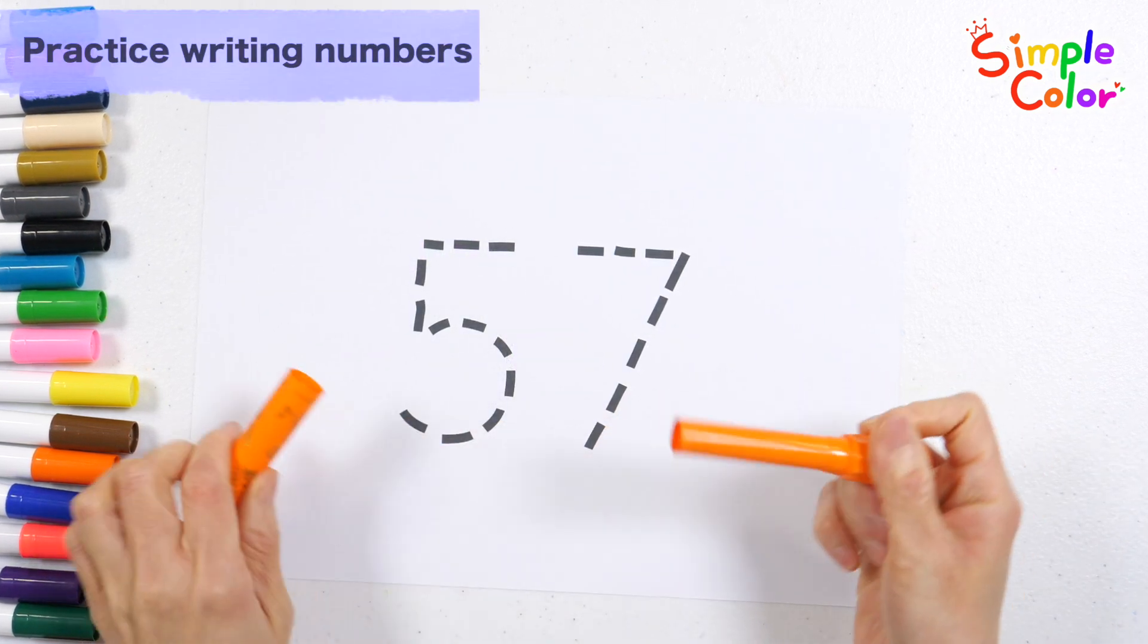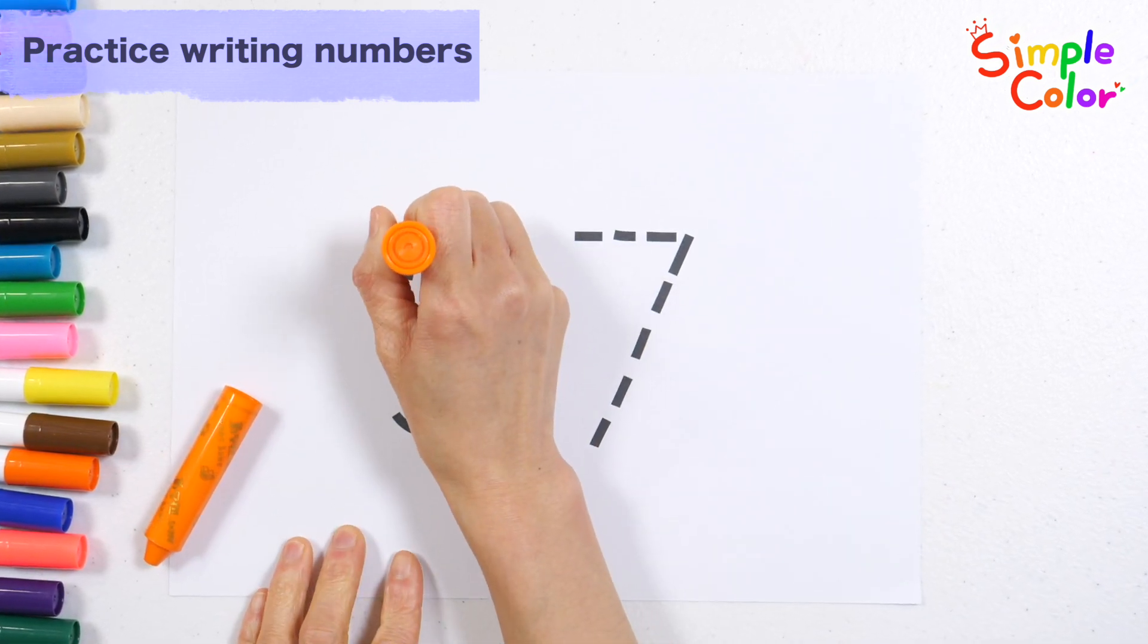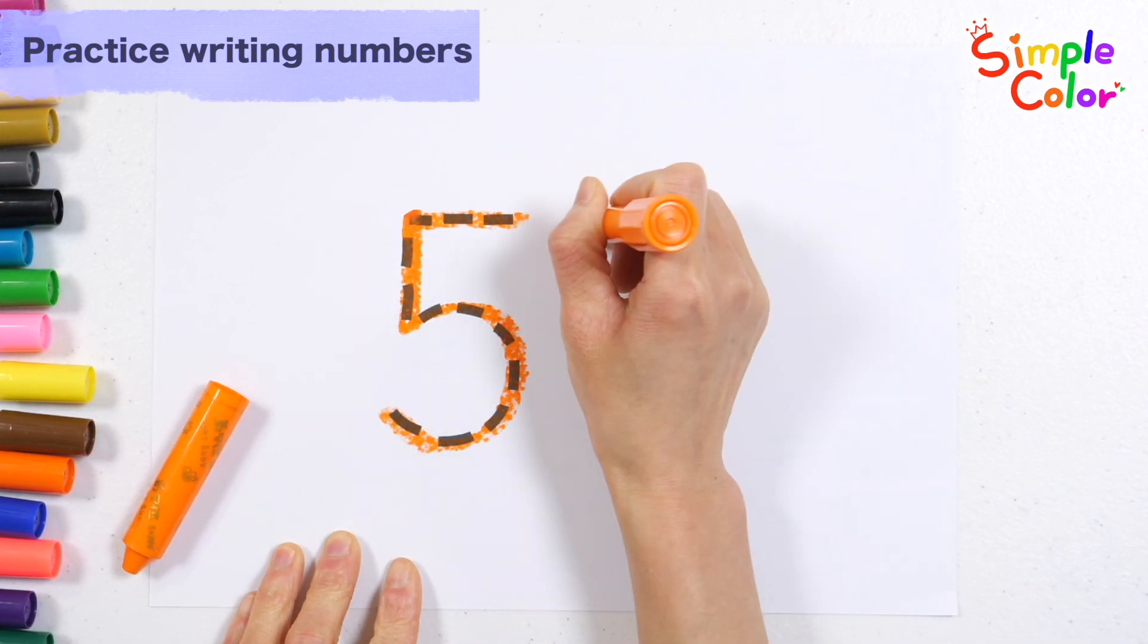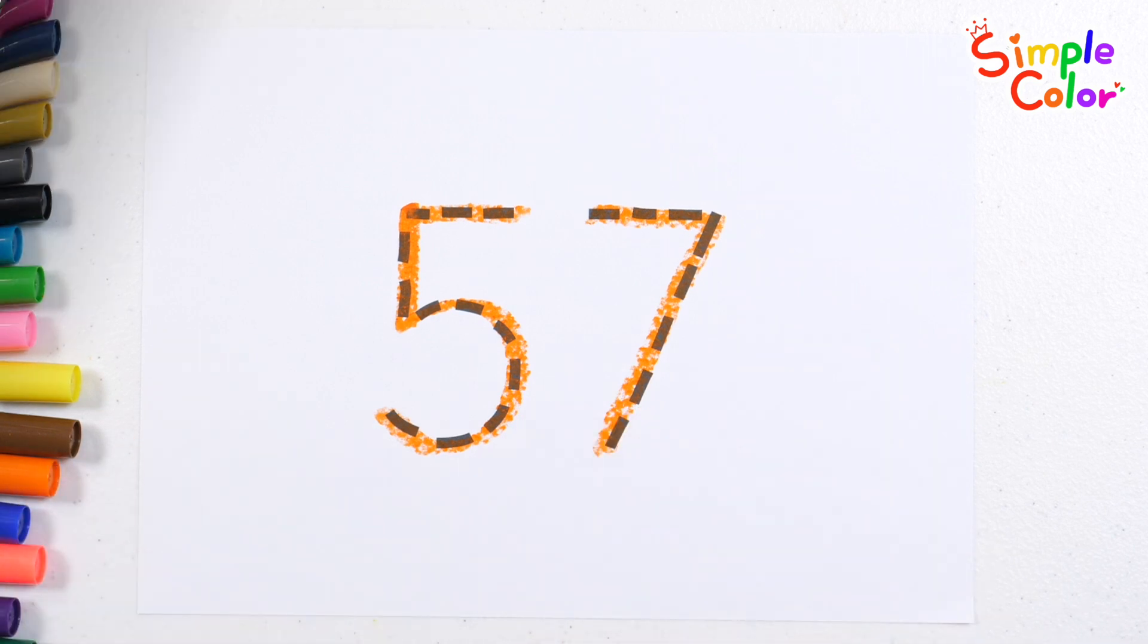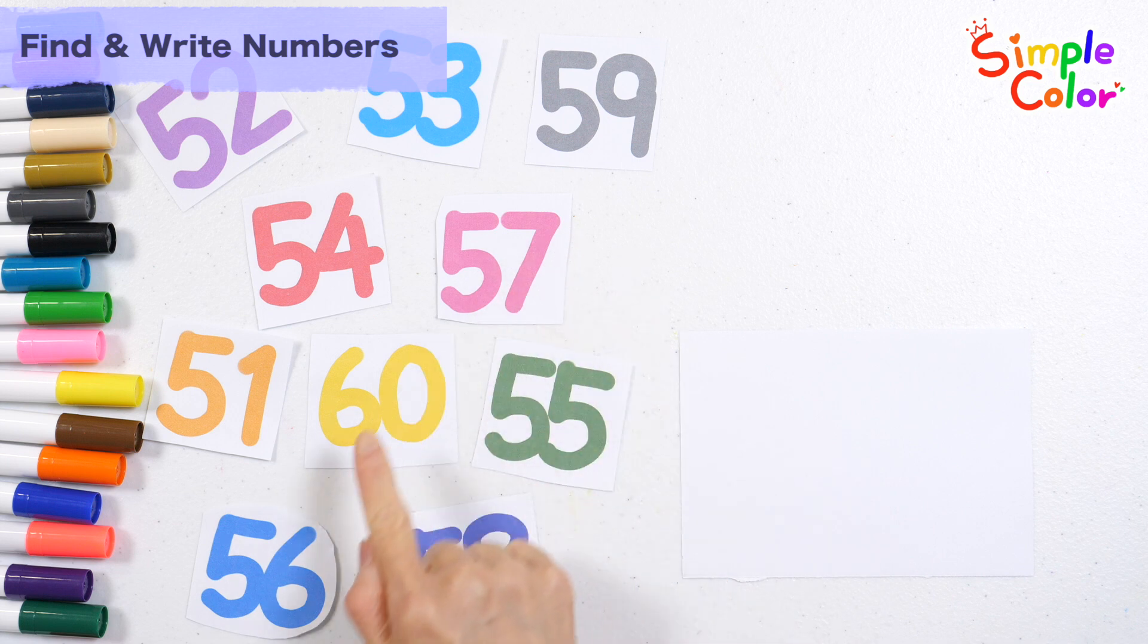Let's write the number fifty-seven along the dotted line. Fifty-seven. Let's find fifty-eight among the numbers on the left.